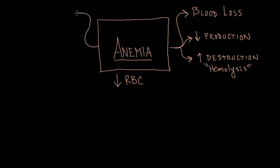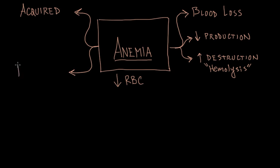Another way to think about anemia is how one gets it. Anemia can be acquired — there are certain infections, certain toxins, and even certain drugs that can cause anemia. Or an individual can be born with a condition that predisposes them to anemia, so anemia can be hereditary.